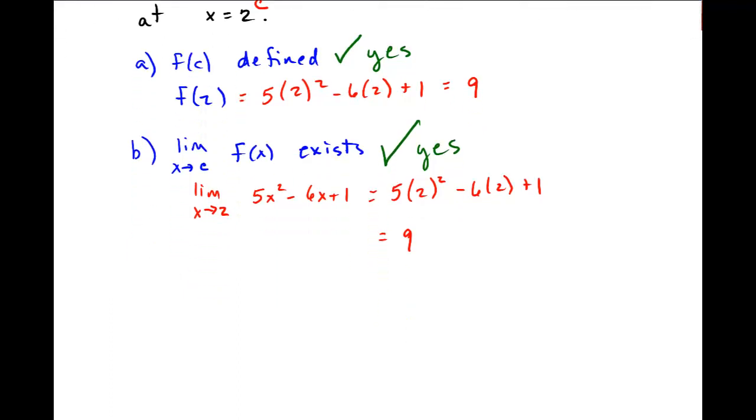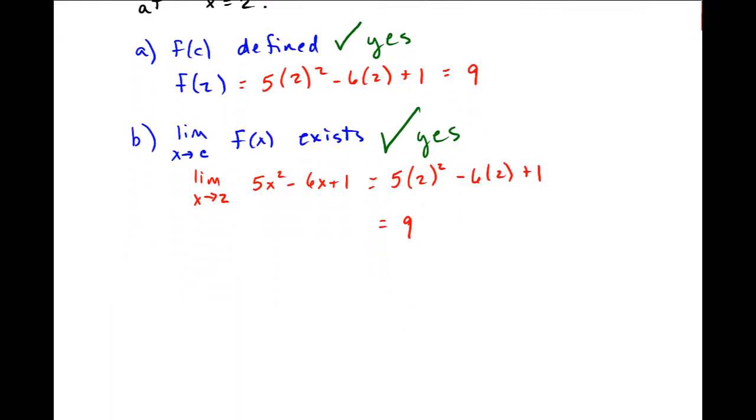Let's go down. We're going to do part 3. The limit as x approaches c of f(x) is equal to f(c). So in my particular case, I want to look at the limit as x approaches 2 of this 5x squared minus 6x plus 1. And is that equal to f(2)?